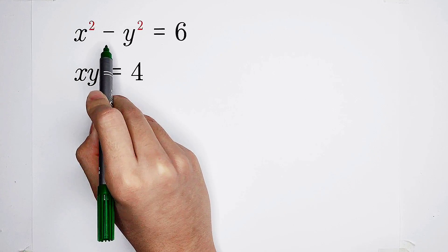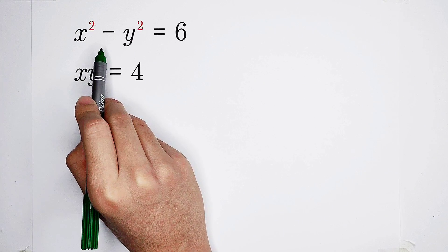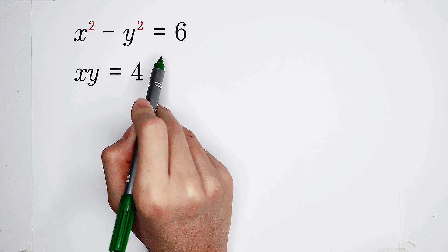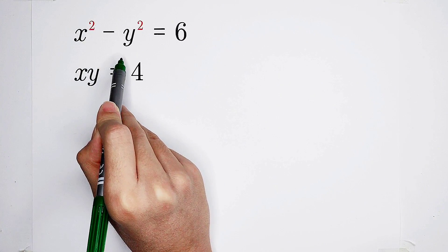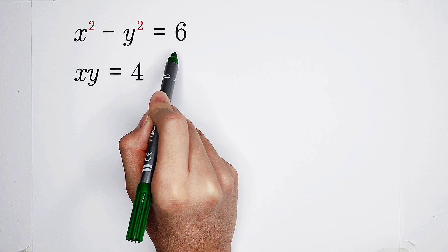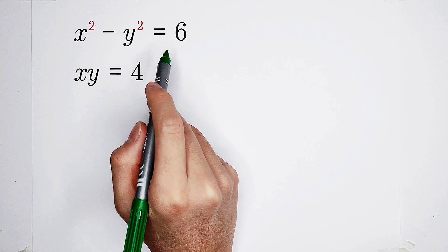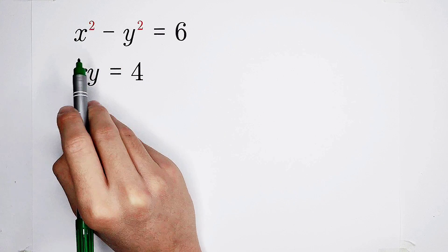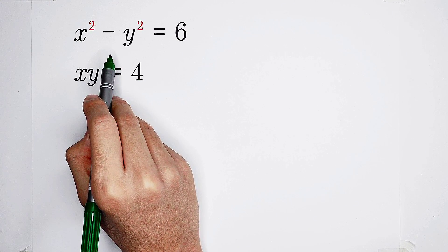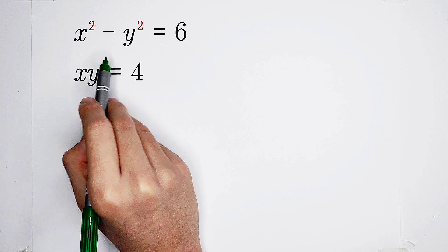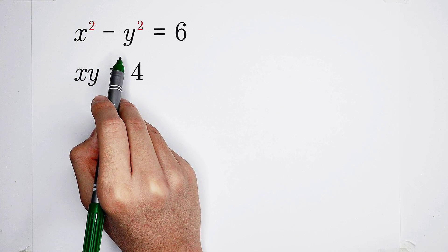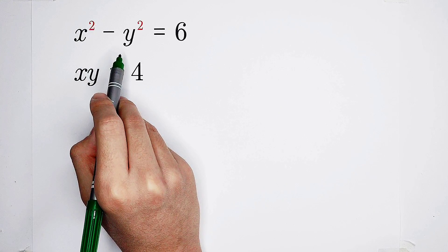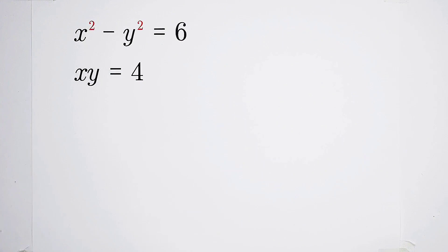Look, here appears a minus — this is a subtraction: x squared minus y squared equals 6. So I think if we can get the value of x squared plus y squared, then we can solve the values of x squared and y squared, and the values of x and y can be solved easily. So our goal is to evaluate x squared plus y squared.